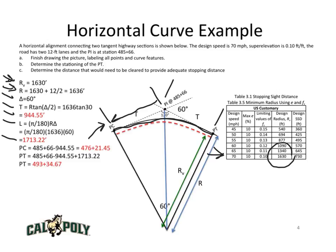To get the PT, we go forward along the curve with the length of the curve. We take the PC station and we add the curve length to obtain 493 plus 34.67.